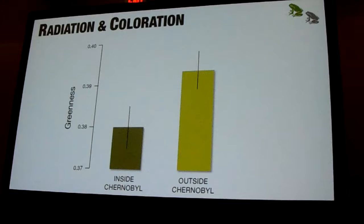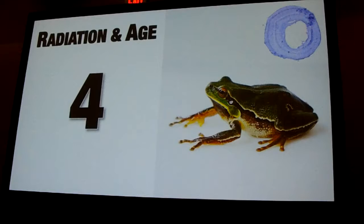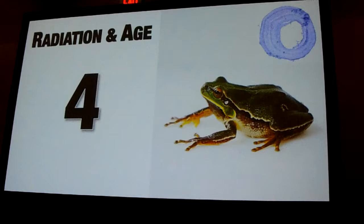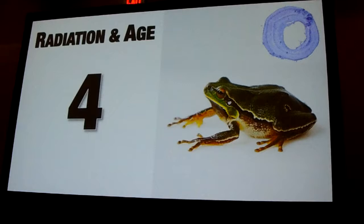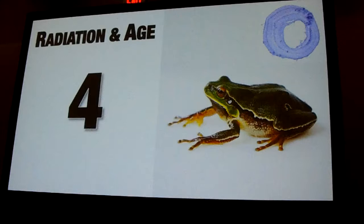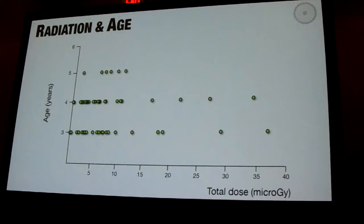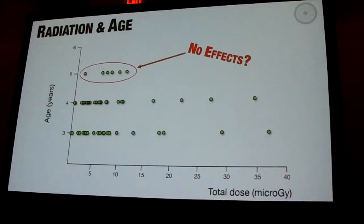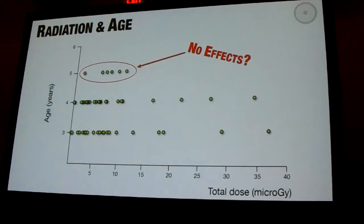The other thing we have been looking at is age and ageing patterns. One of the ideas is that individuals may look fine, but maybe there is a shorter lifespan or faster ageing. Using skeletochronology methods, we can estimate the age of every single individual we have been working with. It doesn't look like there are big differences in age connected with radiation — it's all over the place. Only really old individuals appear at medium to low radiation levels, but this relationship is not significant. We need to add a few more individuals from last year, but it doesn't look like there is anything really strong in this sense.